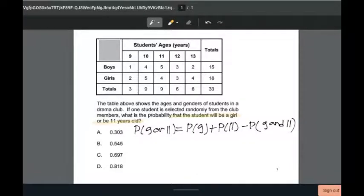The probability of the student being a girl is 18 over 33, the total number of students. Plus the probability of the student being 11 years old, which will be 9 over 33, the total number of students.